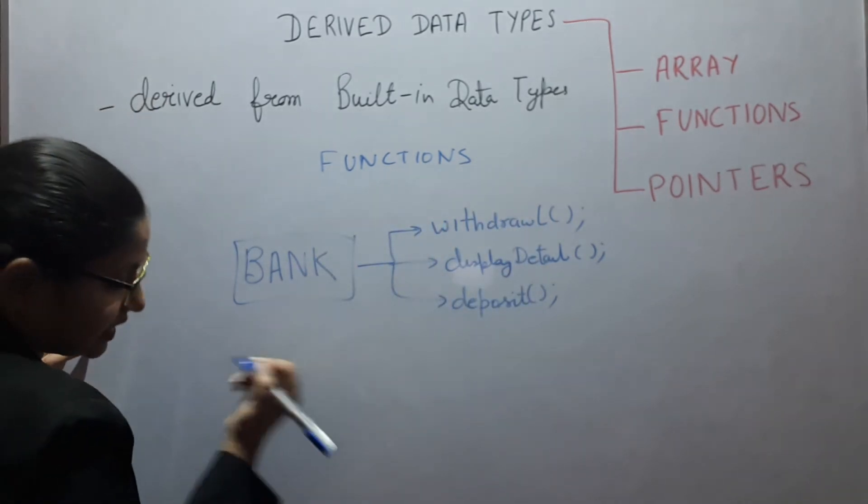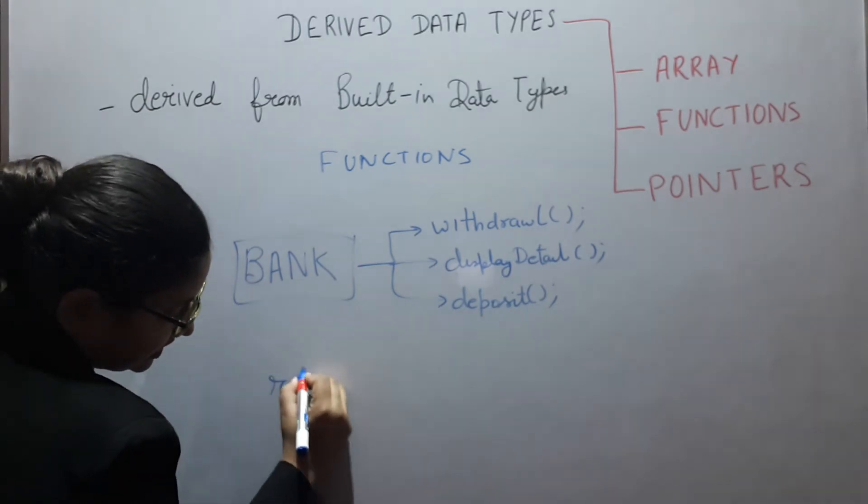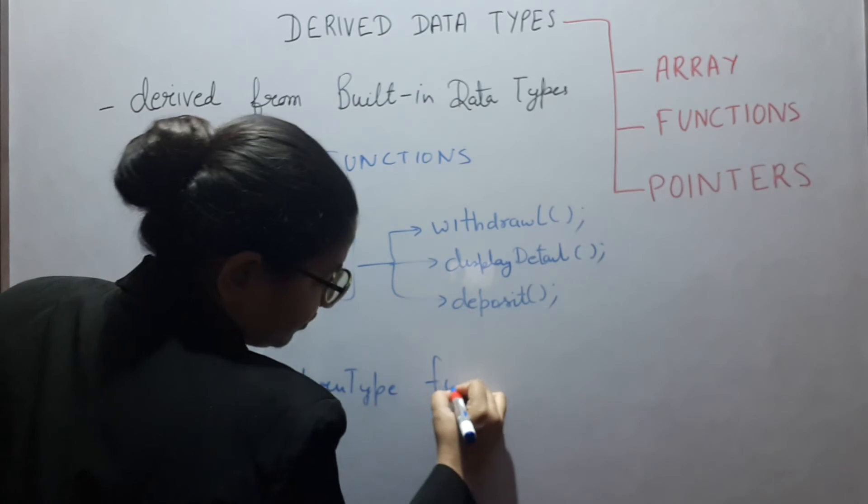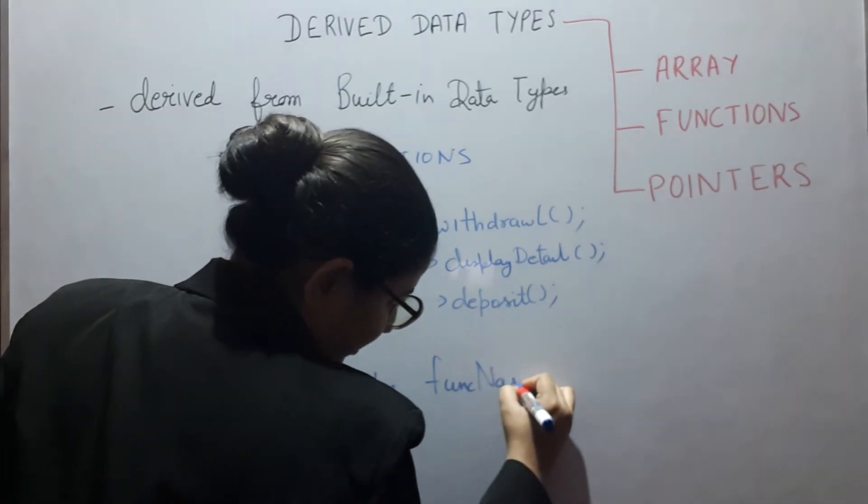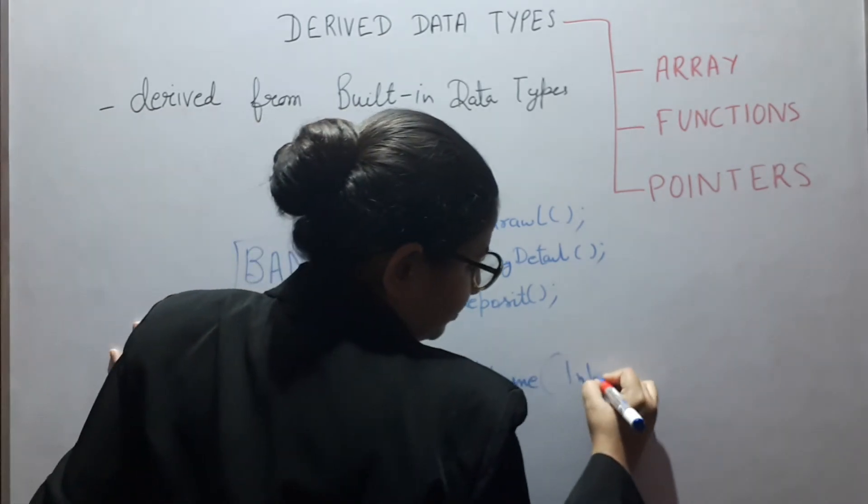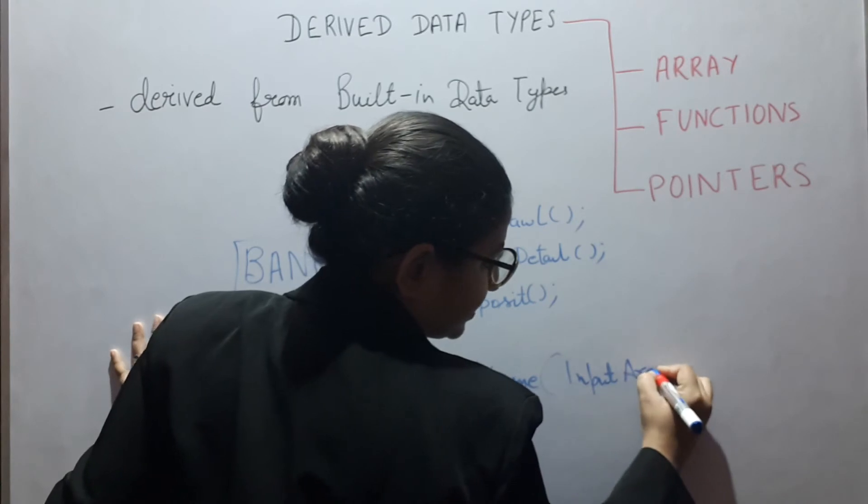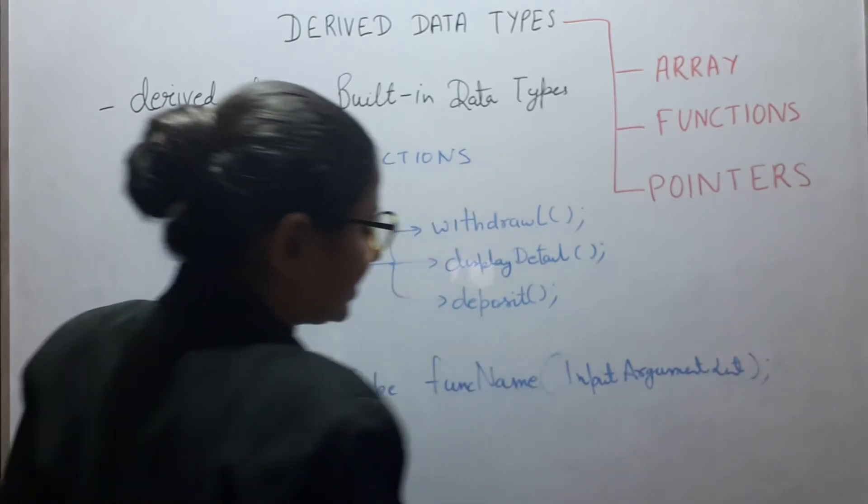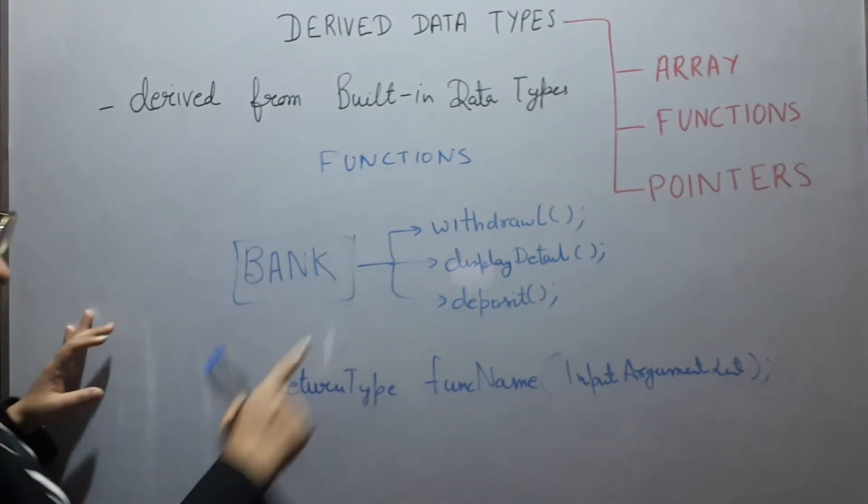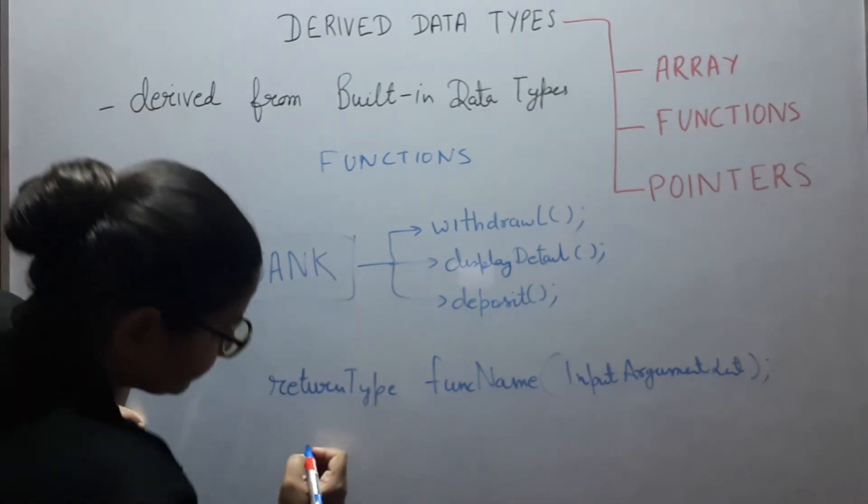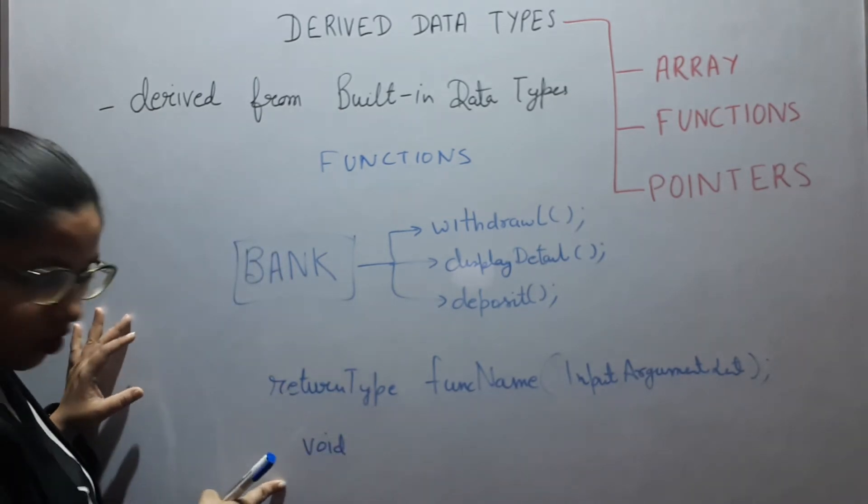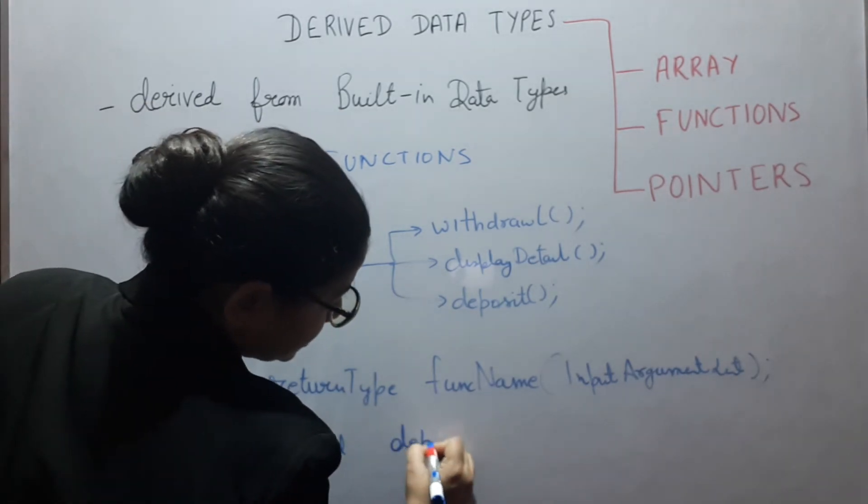And the function signature is return type, function name, and input argument list. Suppose deposit function, it returns nothing. The return type is void, function name is deposit.